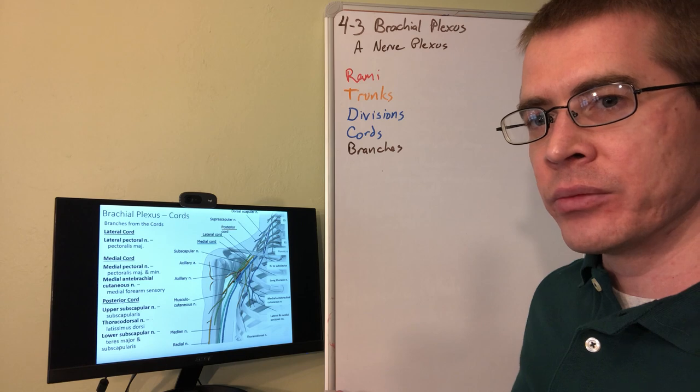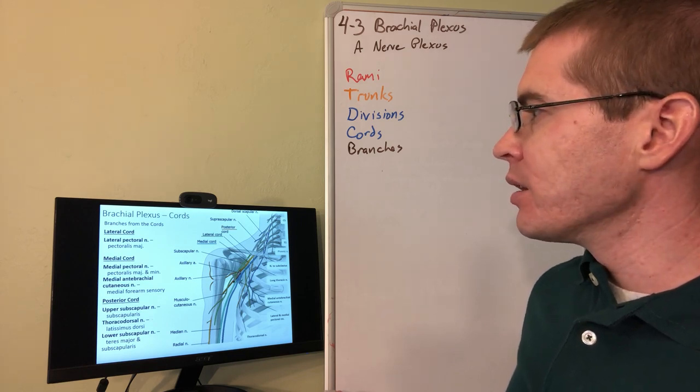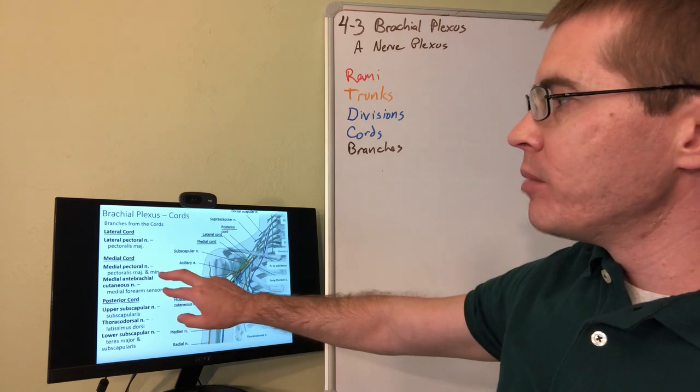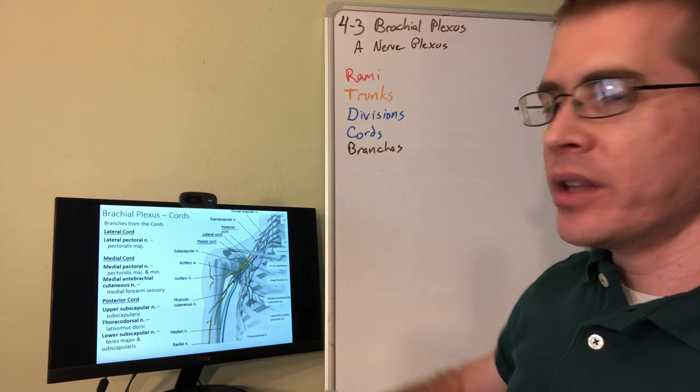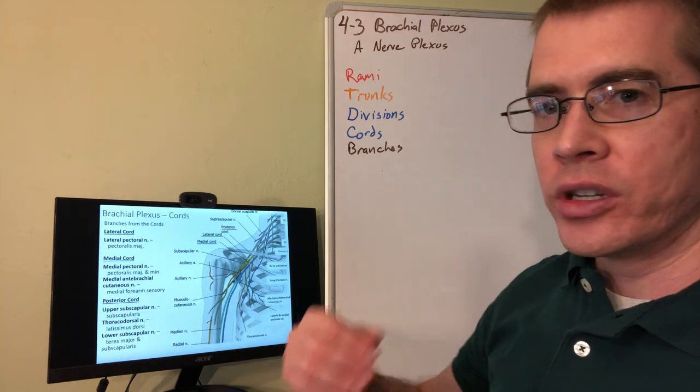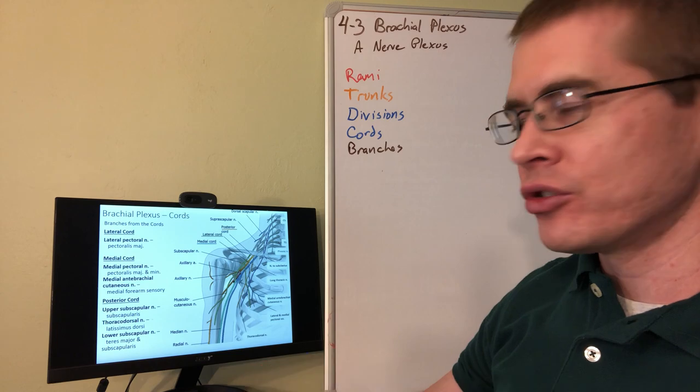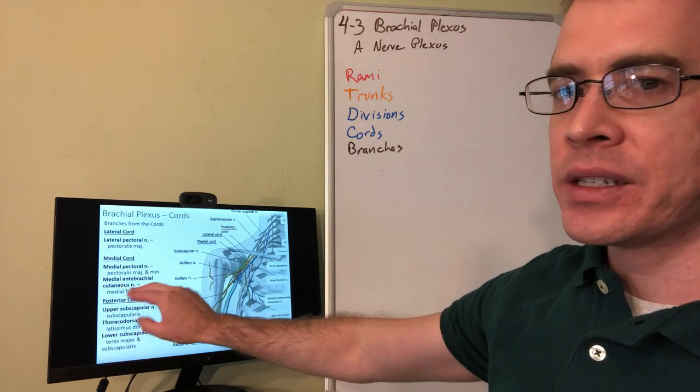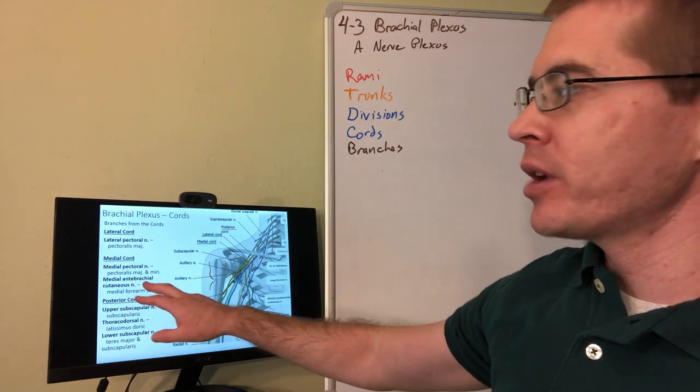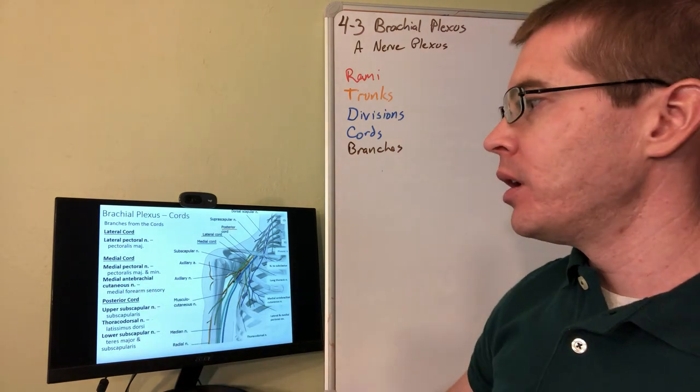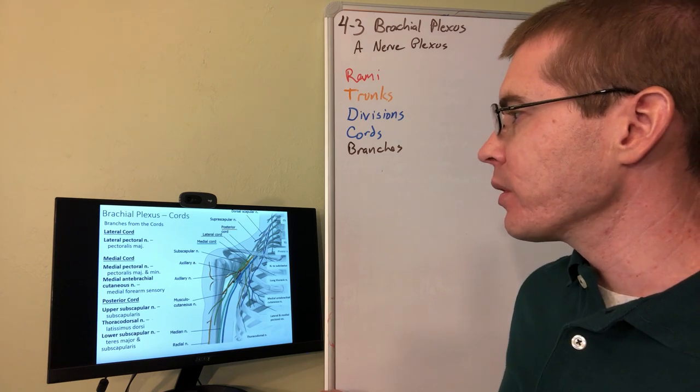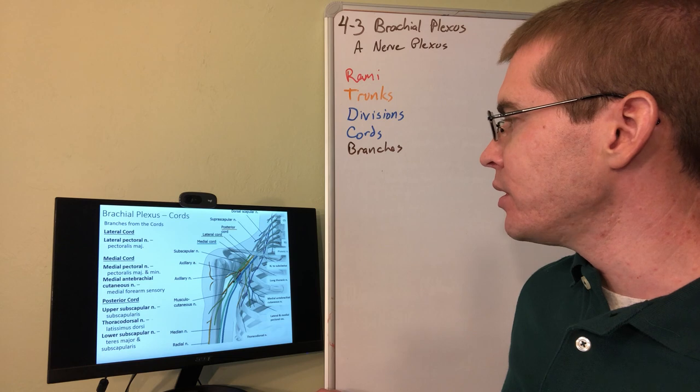And so you can follow these colors on your slide and figure all that information out. So all this is testable information. And here are the terminal branches that are coming off of the individual cords and what muscles or areas they innervate. So if it's a cutaneous nerve that means it's sensory. So start to decode the names of these structures. If cutaneous is in a nerve that means it has sensory fibers in it. Antibrachial means forearm. And so on and so forth.